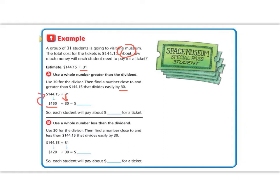But 3 goes into 15 evenly. It goes in 5 times. So 5 times 30 would be 150. And 150 is close to 144. So each student will pay about $5 for a ticket. Not quite, a little bit less.